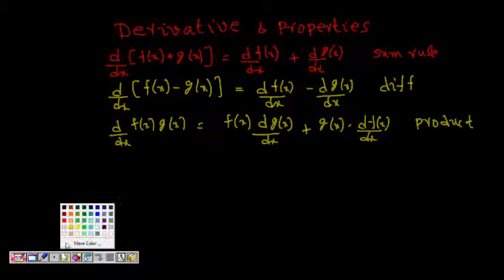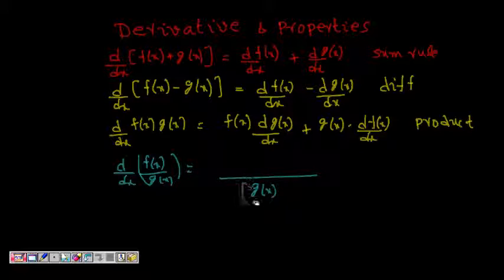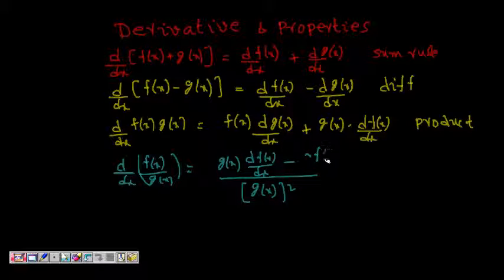The last rule is the division, or quotient rule. For f(x) divided by g(x), the derivative is equal to g(x) squared times [g(x) df(x)/dx minus f(x) dg(x)/dx]. This is the formula for division — the quotient rule.